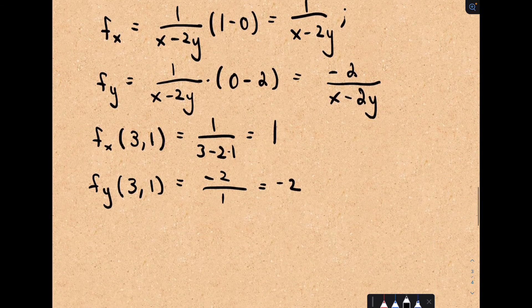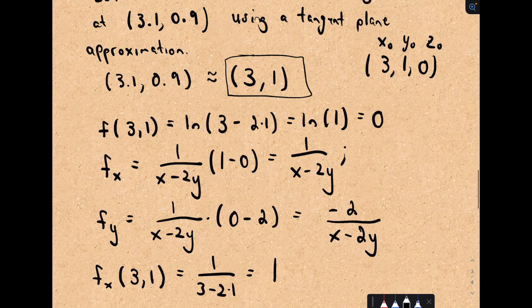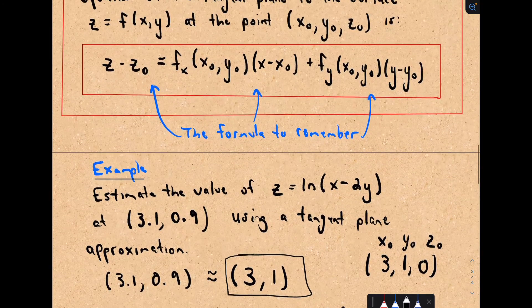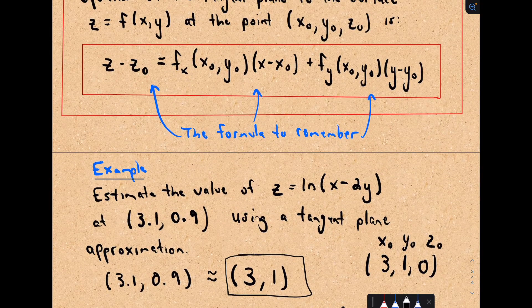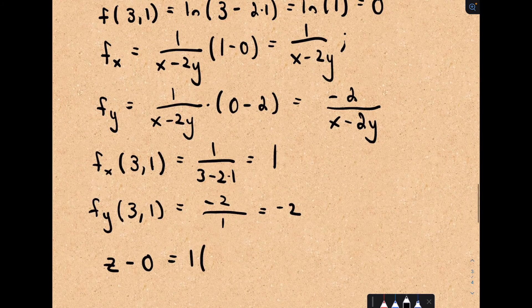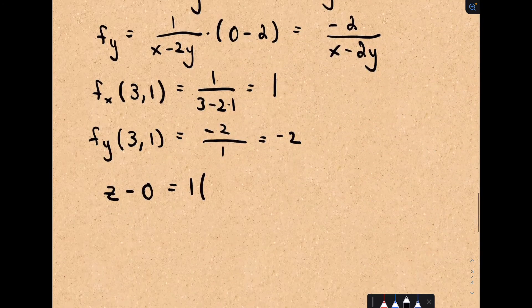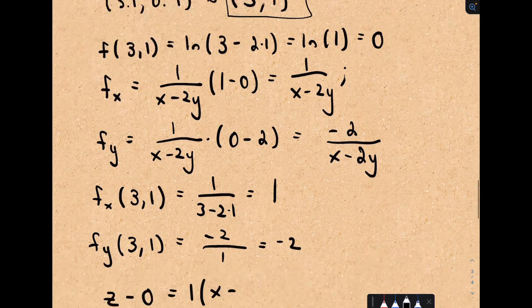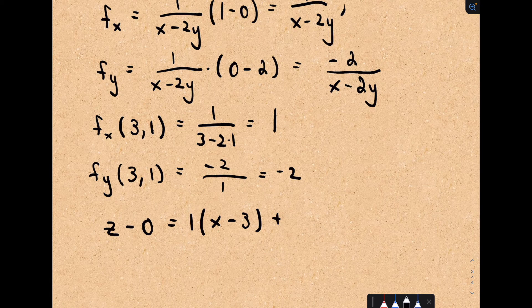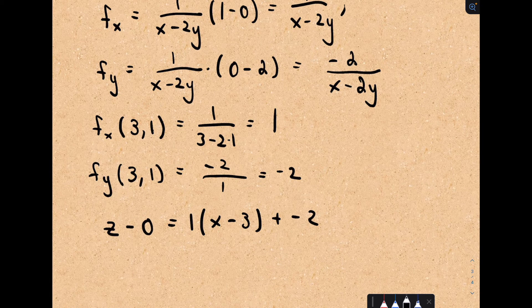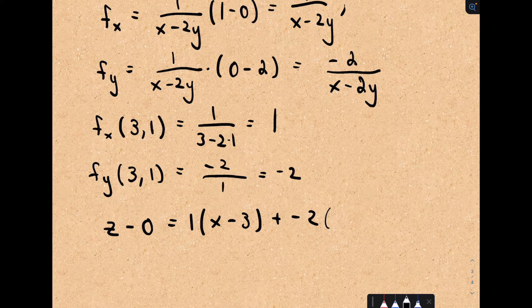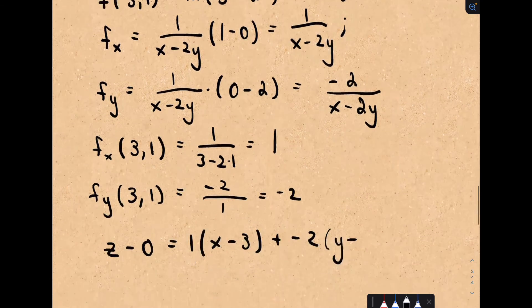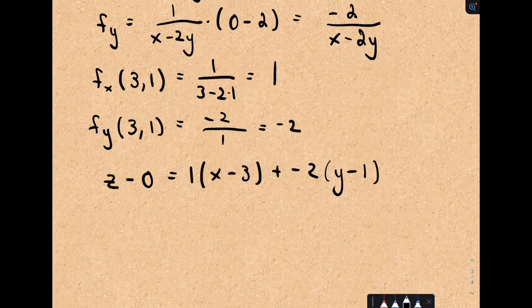Okay, so now I can just plug in everything into the formula. So we do z minus the z coordinate, which we computed to be 0. That equals the partial derivative with respect to x evaluated at our point. We found that that was just equal to 1. This is actually working out pretty nicely. We do x minus the x coordinate, which we said we're picking on 3 in this case.